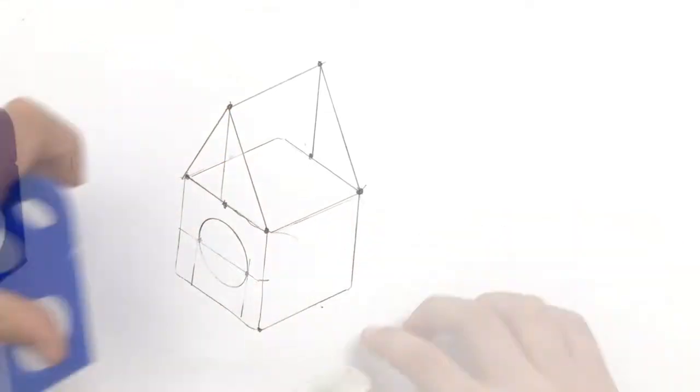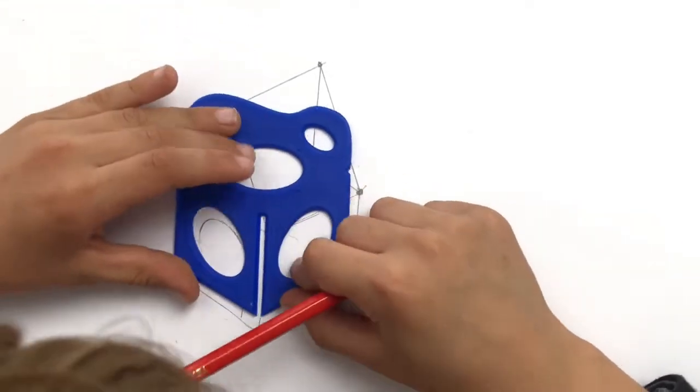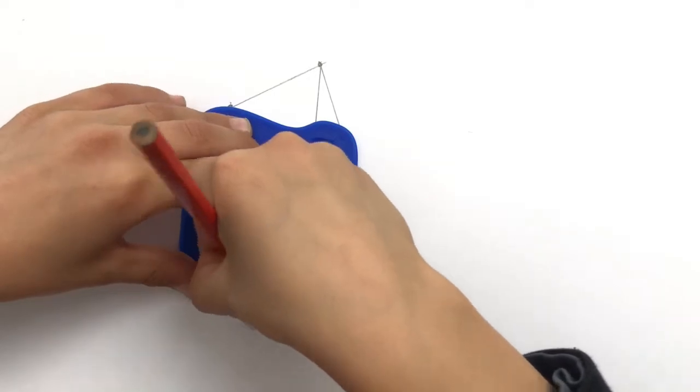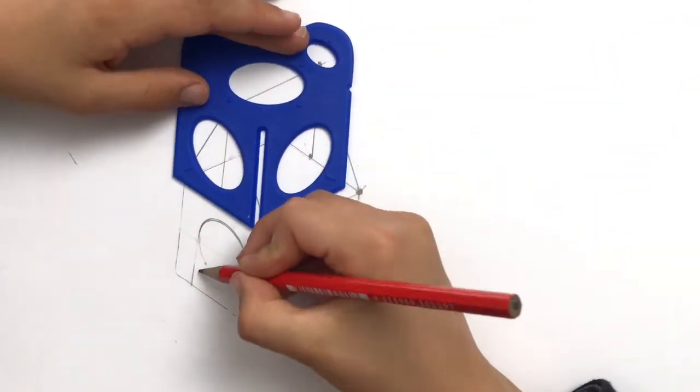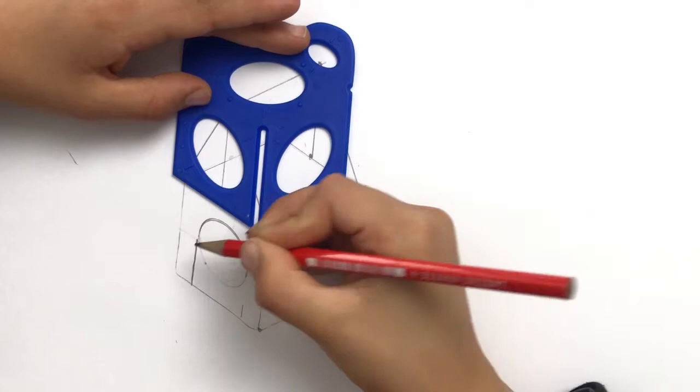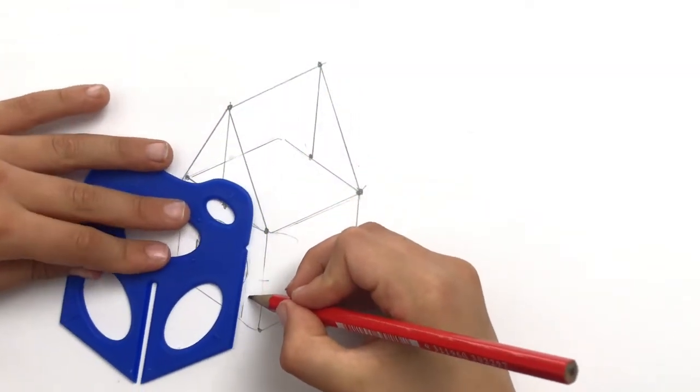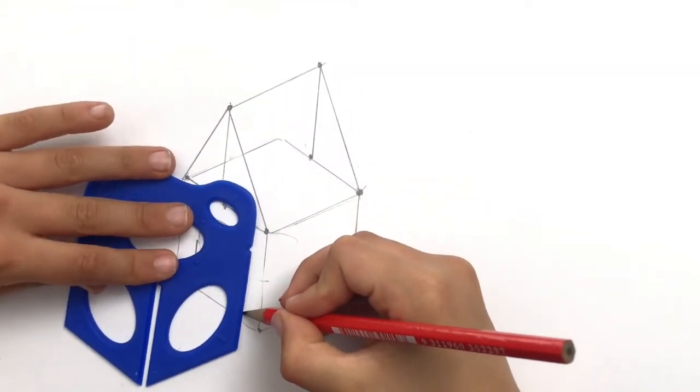Now he's rubbing out the bottom half of the circle. He doesn't need any more. And then he knows to firm in. He's got a pretty good idea now of what the shape looks like, so he's using heavier lines. We say firming in.